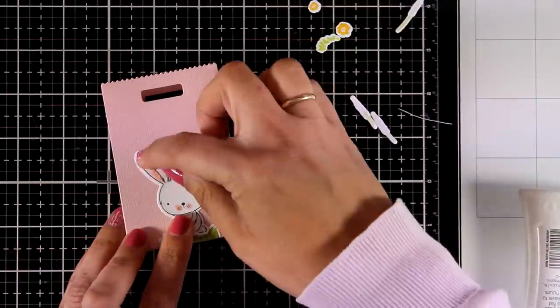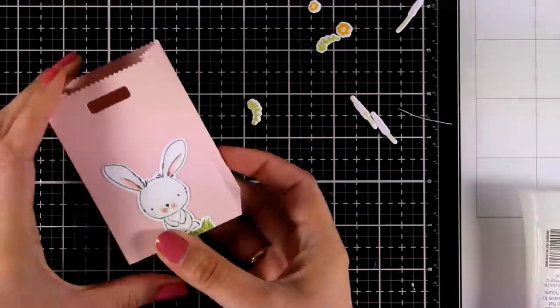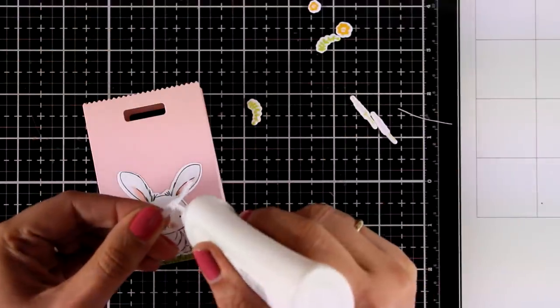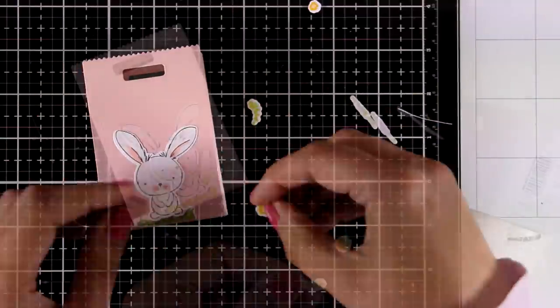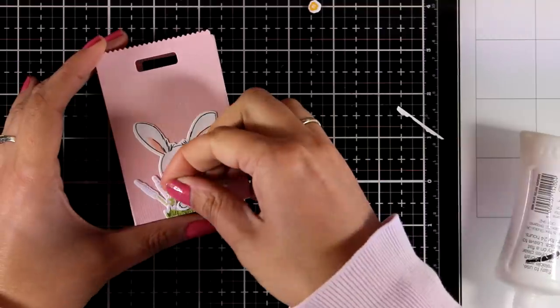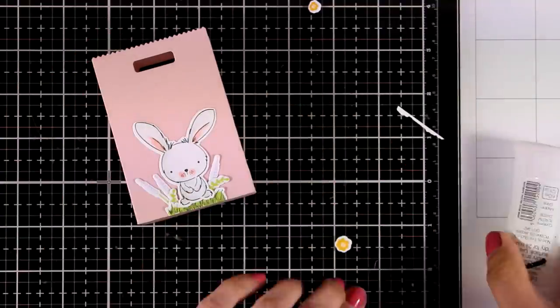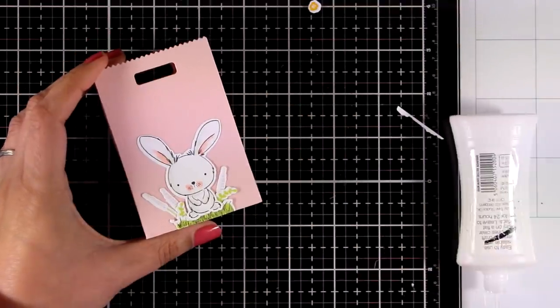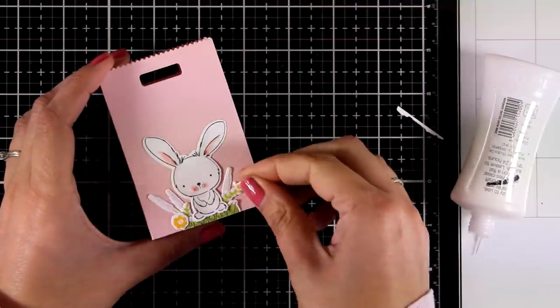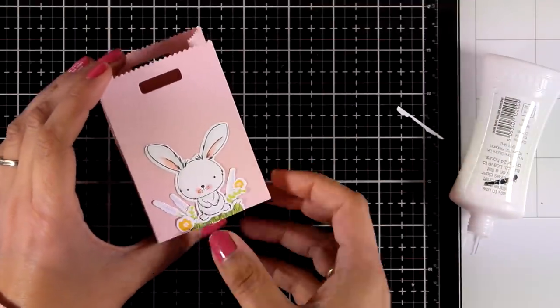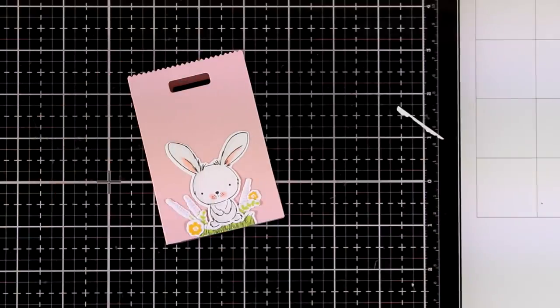Now I'm going to use all those die cuts and create a little scene at the front of my bag. For that I'm using my white glue at the back of all those cutouts and my little bunny is going to sit on the grass and have some little flowers surrounding him. Now this is a bag that would take a little bit more time to create since it has all that beautiful decoration at the front, but it's a nice little treat bag for a special gift.